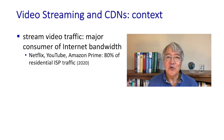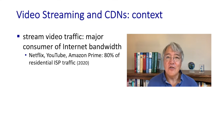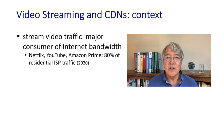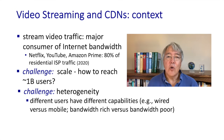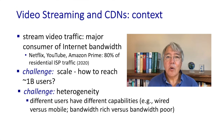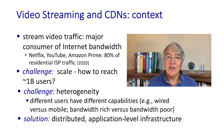Streaming video traffic is a major consumer of internet bandwidth. By some estimates, 80% of residential ISP traffic is streaming video traffic. When we think about streaming video, a couple of challenges become apparent. First, there's the issue of scale — we want to reach tens or hundreds of millions of users. Second is heterogeneity: some users are mobile, some fixed, some on high-speed broadband, others on bandwidth-poor connections. The answer is a very sophisticated application-level distributed infrastructure.